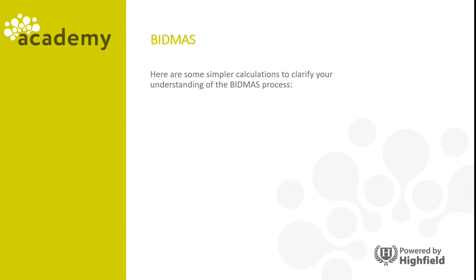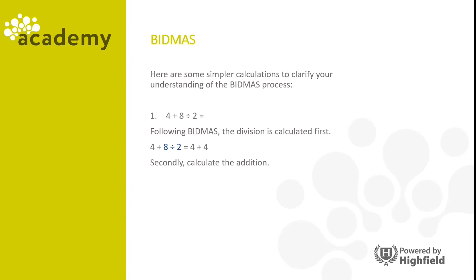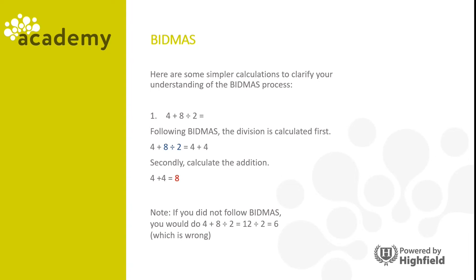Here are some simpler calculations to clarify your understanding of BIDMAS. Take four plus eight divided by two. Following BIDMAS, the division is calculated first — eight divided by two is four. The calculation then becomes four plus four, which equals eight. If you didn't follow BIDMAS and did four plus eight first, you'd get twelve divided by two equals six, which would be the wrong answer.